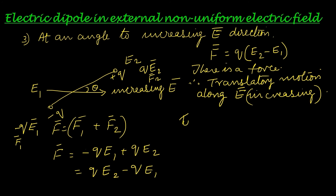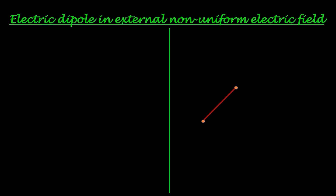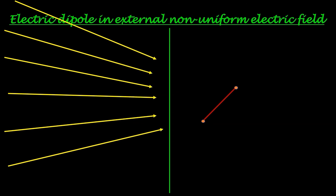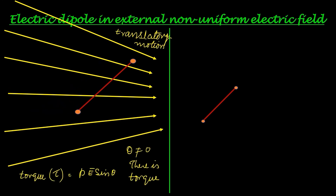Torque τ = pE sinθ. Here θ has some value, so there is torque, and the dipole experiences rotatory motion as well. The force on positive q is along the direction of the electric field, and the force on negative q is in the opposite direction. The effect of the torque is that the dipole turns in the clockwise direction to align with the increasing electric field direction.